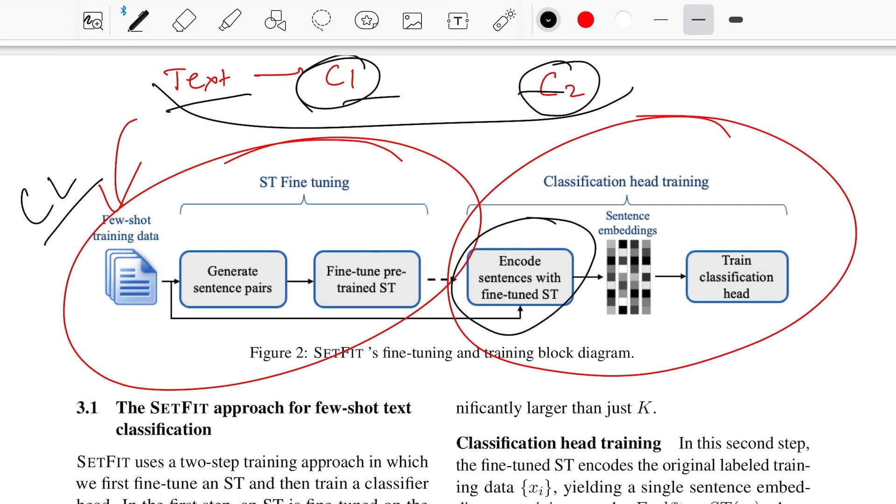Once that is done, you freeze that model and just tune the classification head for it to know whether it belongs to class one or class two. That's the second level of tuning done just on the head section. Here they train a logistic classifier in case of binary classification. Now let's jump to see this contrastive learning mechanism.